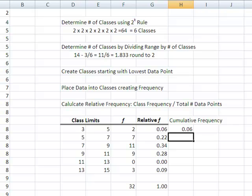So we start with the frequency in the smallest class. Now I want to know, for cumulatively, how many data points fall below 7. Well, that's everything in the first class plus everything in the second class. So I'm going to say 0.06 plus 0.22 means that 0.28, or 28% of my data, falls below the upper class limit of 7.